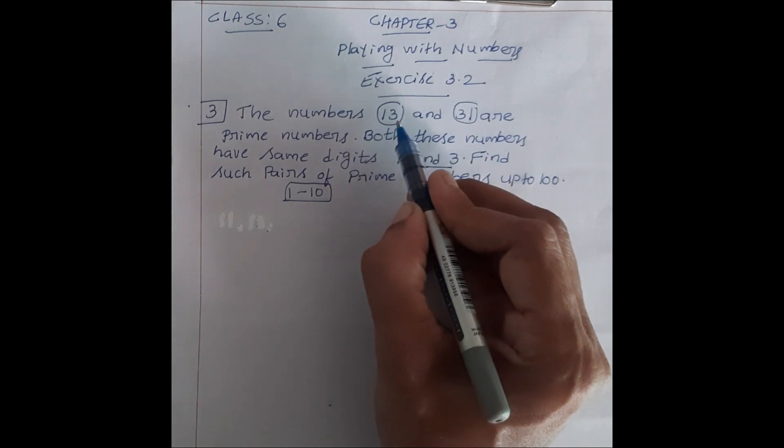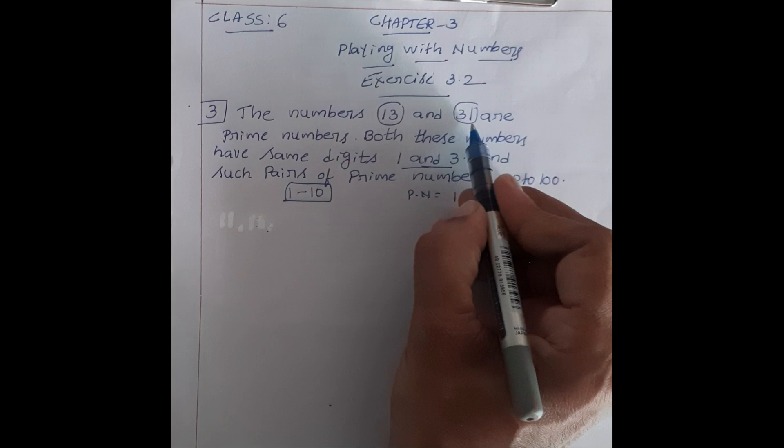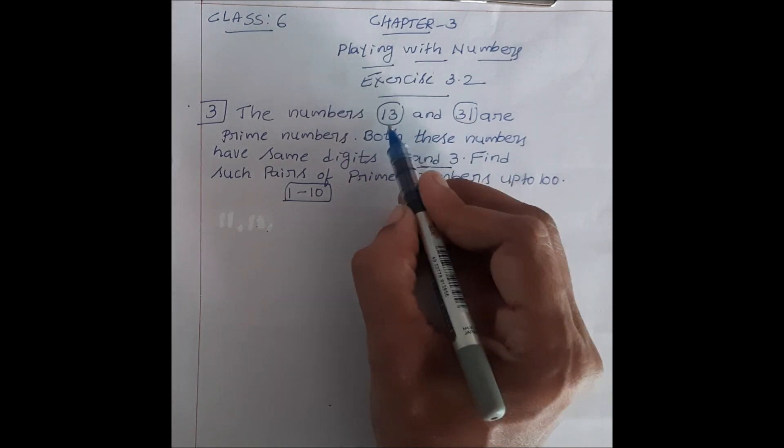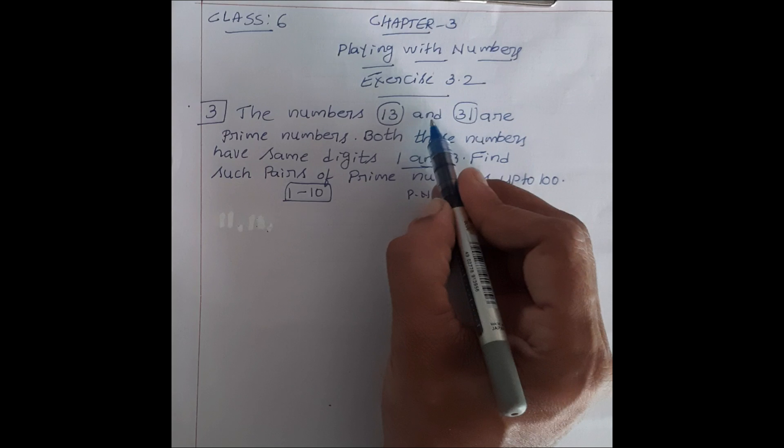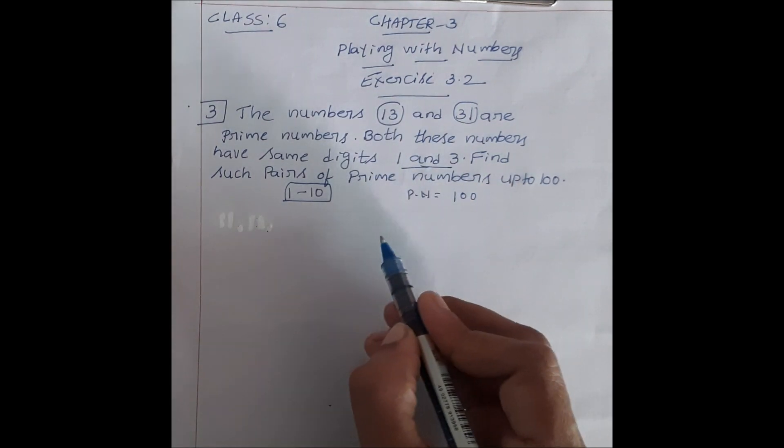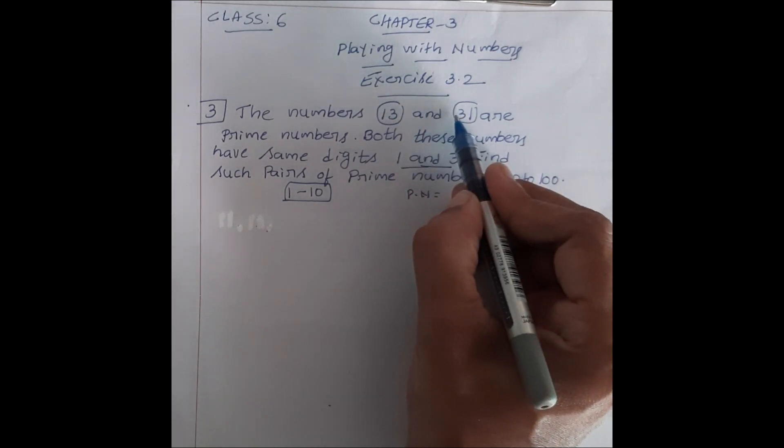Idhar right hand side pe 3 hai, left hand side pe 1 hai. Idhar right hand side pe 1 hai, left hand side pe 3 hai. Iska pair banaya gaya hai, aisa. Ab 100 tak prime numbers likhke pair banana hai.